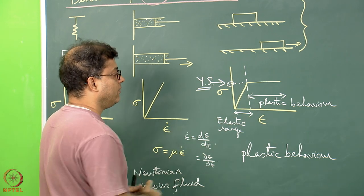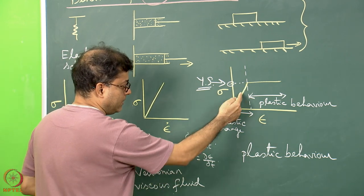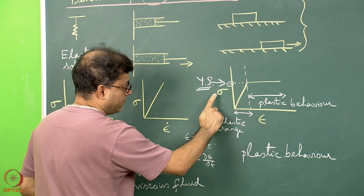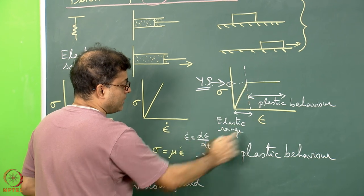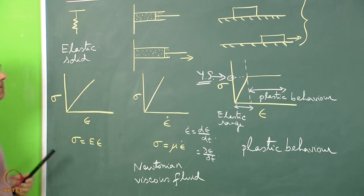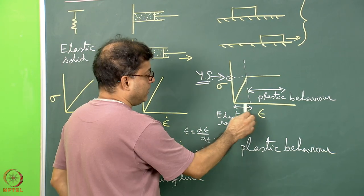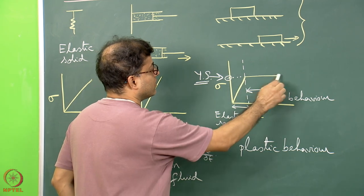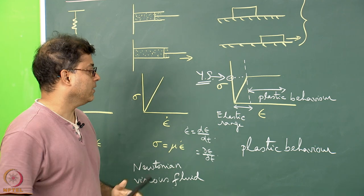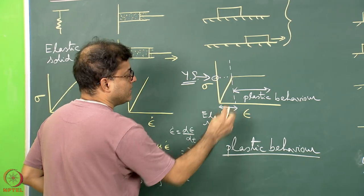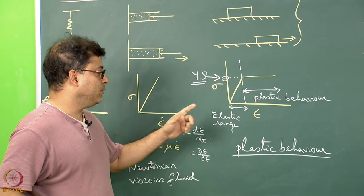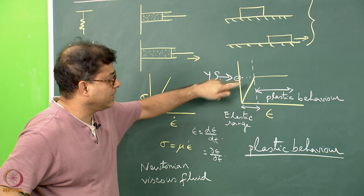This entire behavior can be broken into two parts. The first part, where stress is proportional to strain, is the elastic range — comparable to the spring model. Beyond this elastic range is the plastic behavior. When I say plastic behavior, I am talking essentially about that portion beyond the yield stress, not the elastic portion. The material's composite behavior can be: first elastic, then plastic.